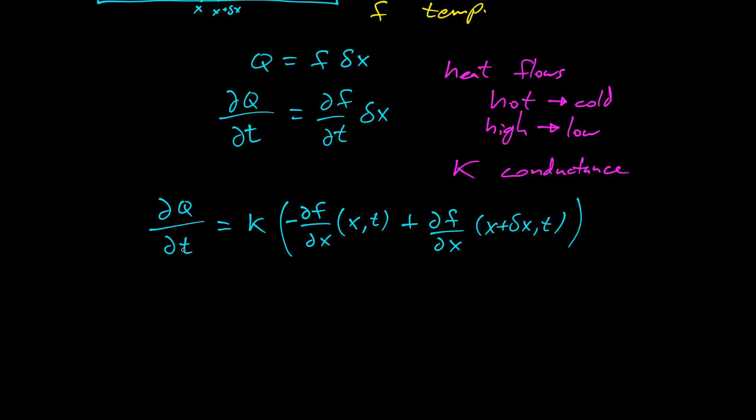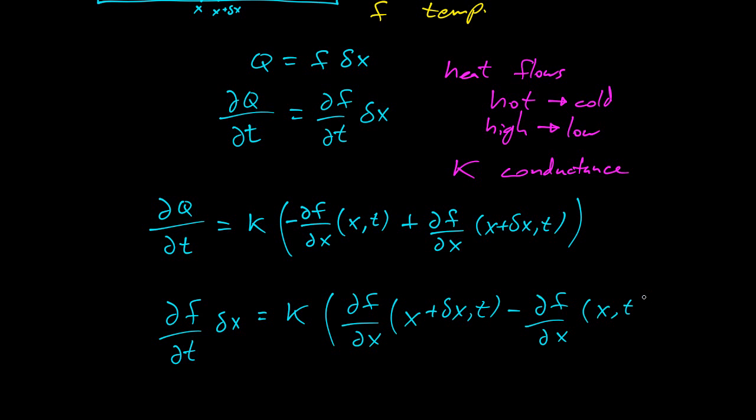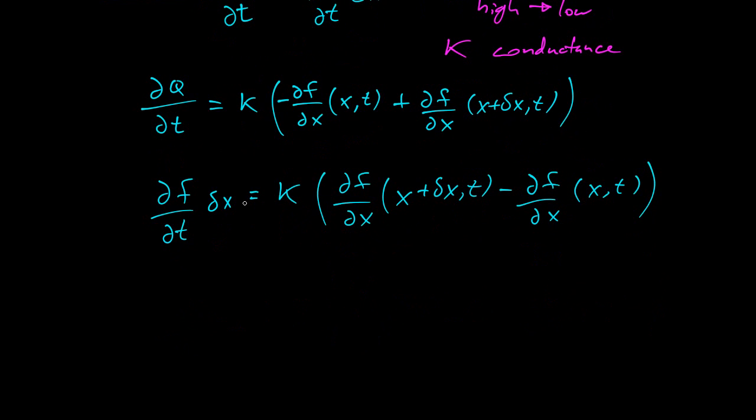So this is partial of q with respect to t, partial q with respect to t, these can be set equal. So let's do that. Let's say partial of f with respect to t delta x equals k. I'm just going to swap these around. Partial of f with respect to x, x plus delta x minus evaluated at x. Now I just divide both sides by delta x. Now I have a formula for partial of f with respect to t.